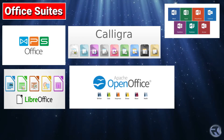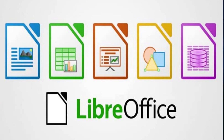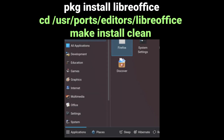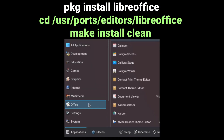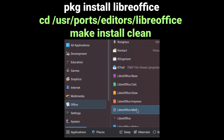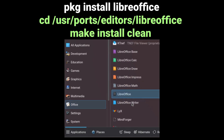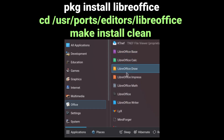The next one is LibreOffice. I think this needs no introduction — it's probably one of the most widely available open source office suites there are. It's installed on many, many Linux distributions, but it's also available for FreeBSD users. You can install via package or via ports. And just like WPS Office, it will auto-populate in the menu. We're using KDE, so your own desktop environment or window manager might not behave in the same way.